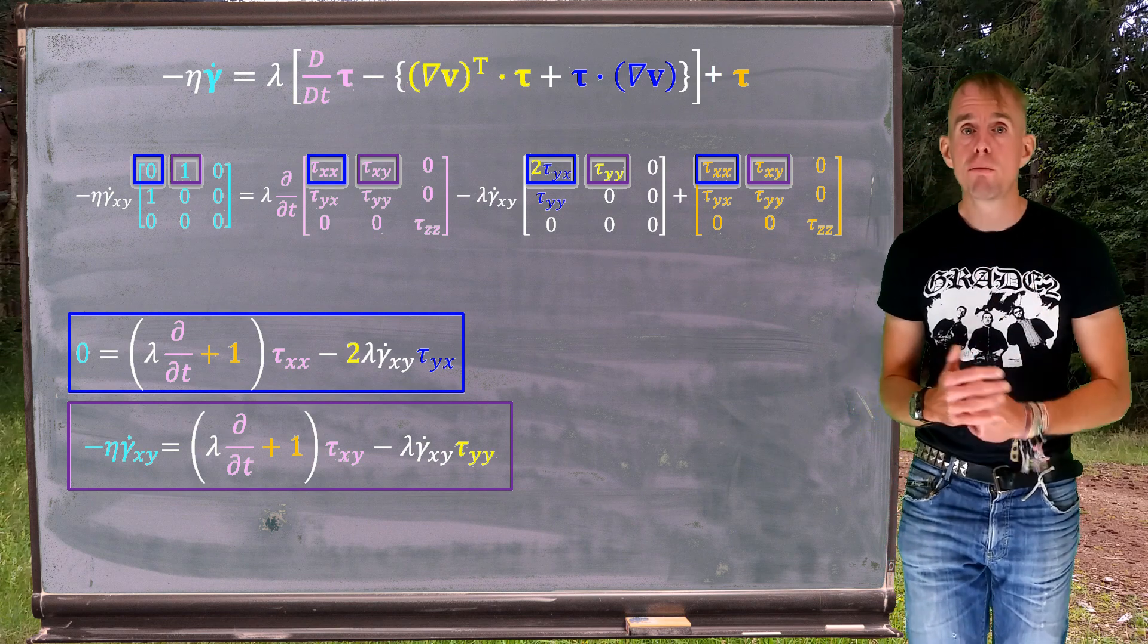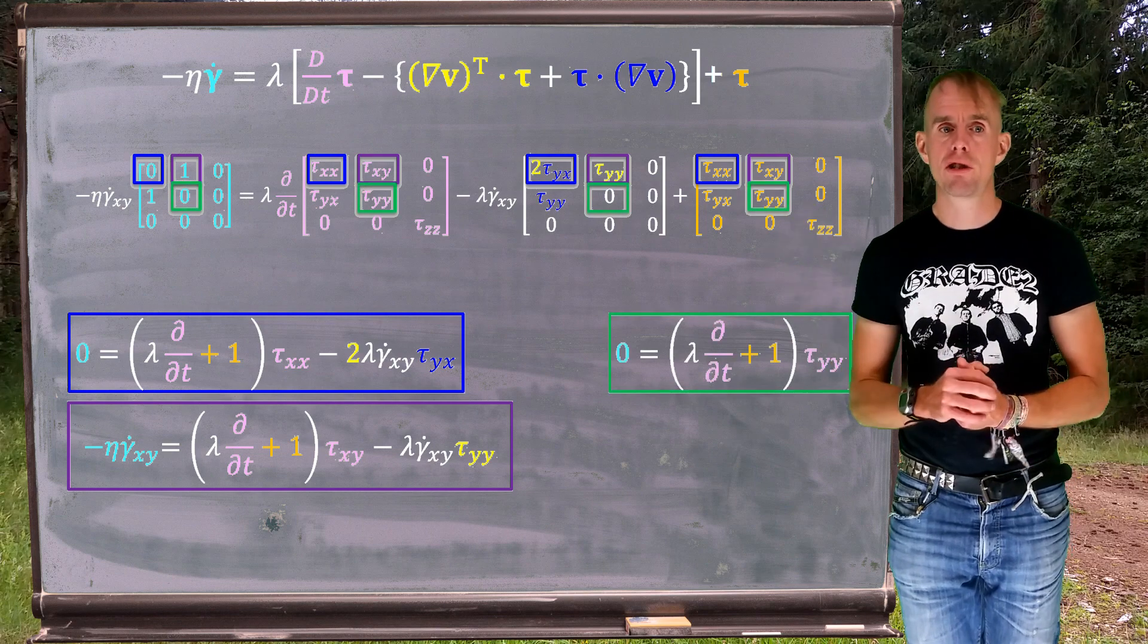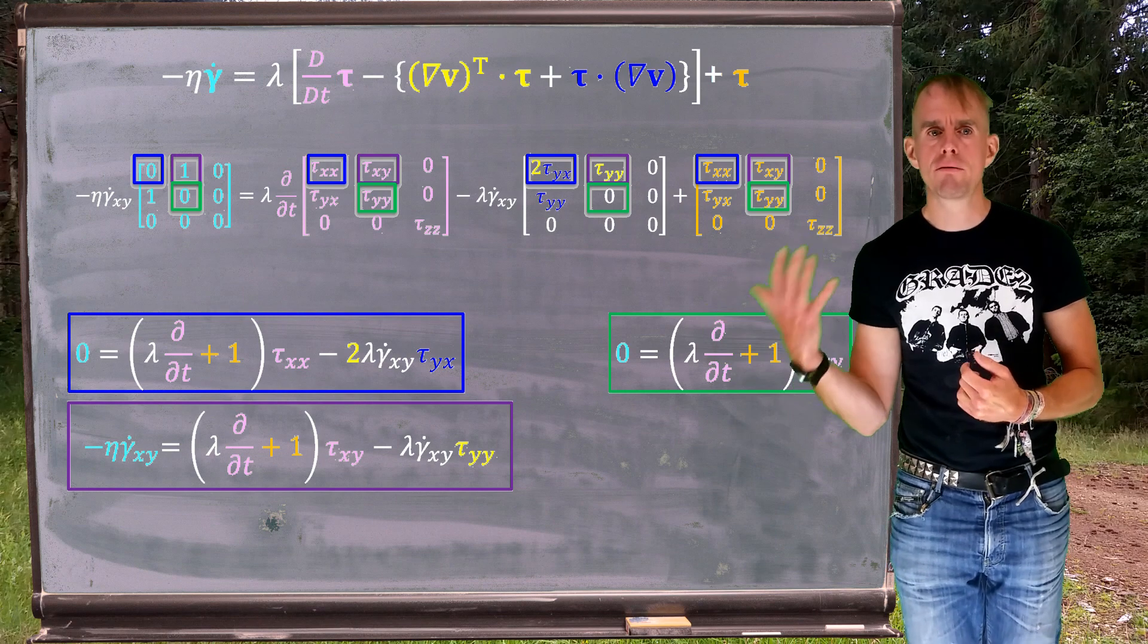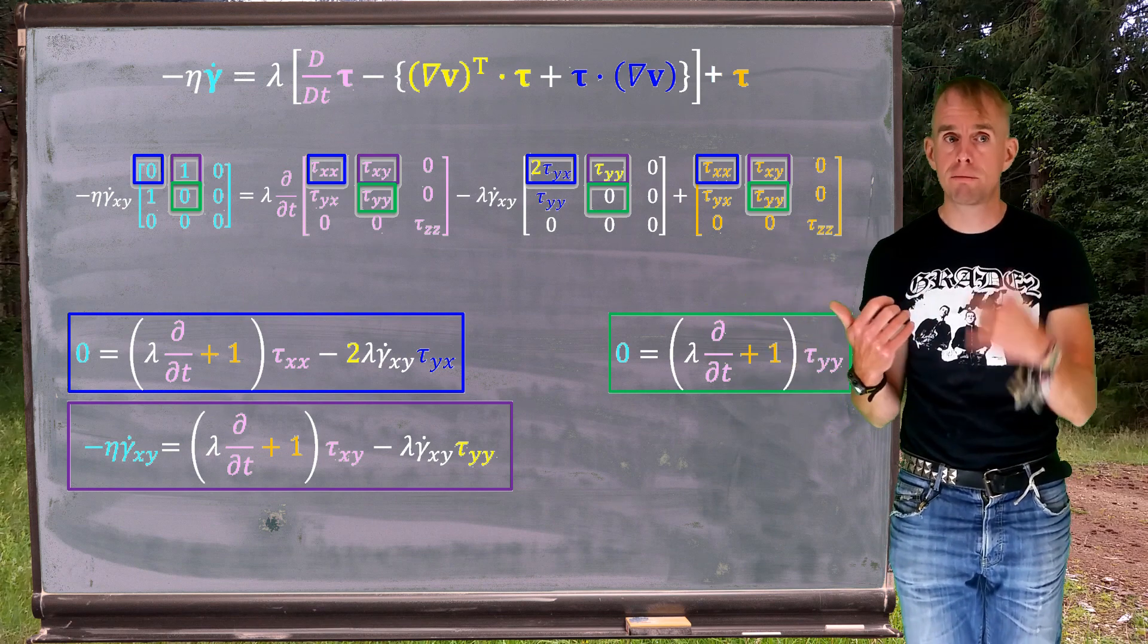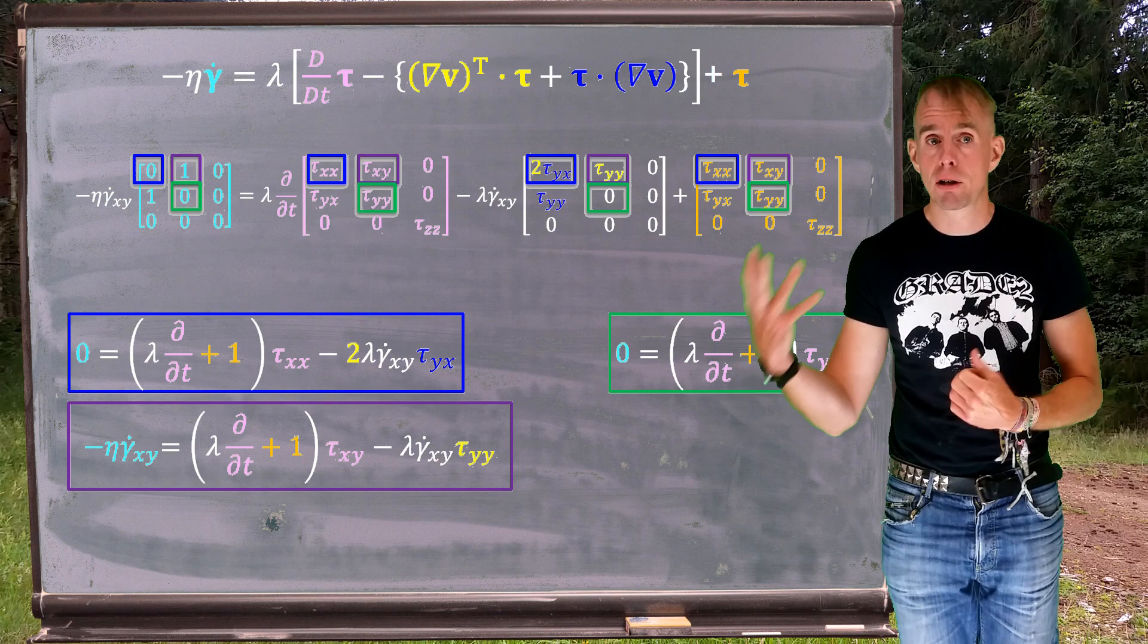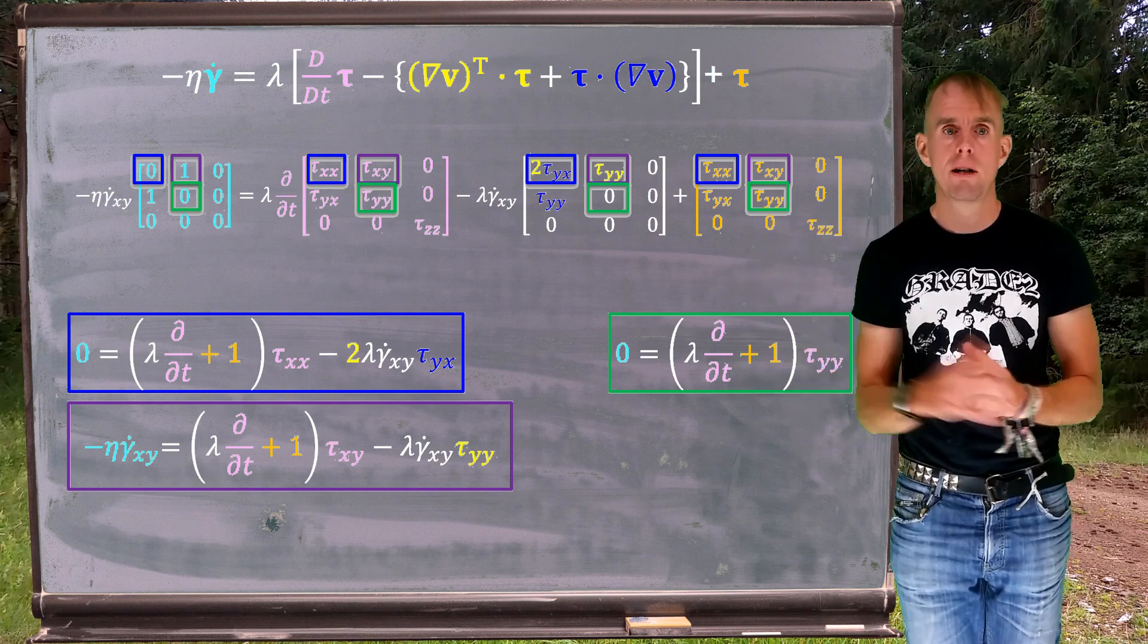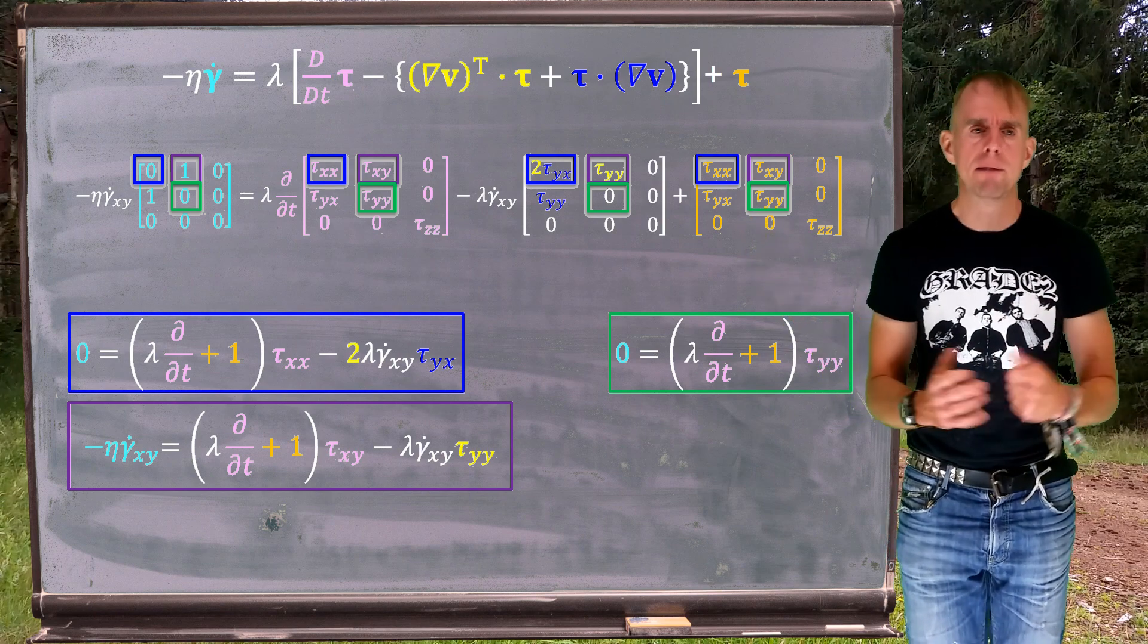We've got two more equations to look at. Let's have a look at the 2,2 position. The left-hand side is zero. The right-hand side only involves tau yy, both as a partial time derivative coming from big D by big Dt of tau, and also by itself because of the virtue of the stress tensor also being on the right-hand side there in orange. And hopefully we can see immediately that tau yy is actually zero.